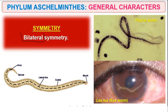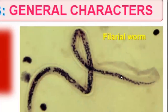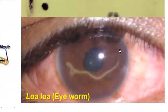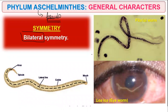They show bilateral symmetry. An important frequently repeated question is that Aschelminthus are pseudo-coelomate — they do not have a well-defined coelom but a false coelom. Examples shown include filarial worm causing filariasis, and Loa loa, which is the eye worm — a small worm sometimes visible inside the human eye, which is actually harmful.